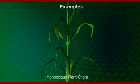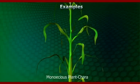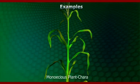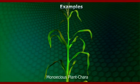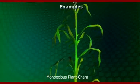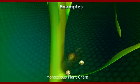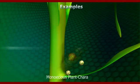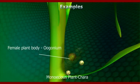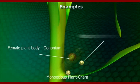In case of plants, monoecious plants means male and female organs are present in the same plant body. The female plant body is called Eugonium and the male plant body is called Anthridium.